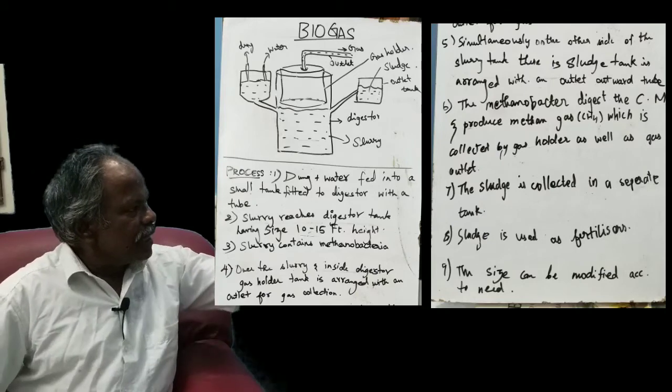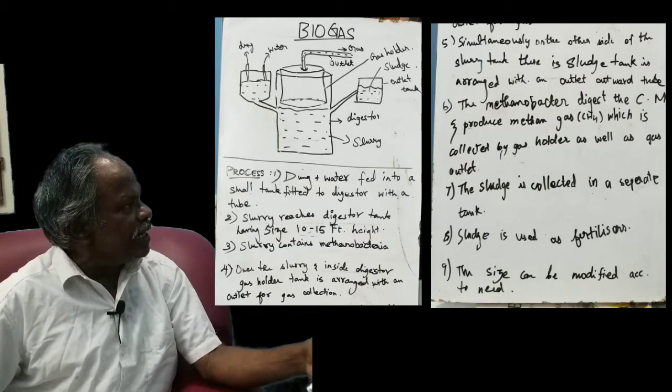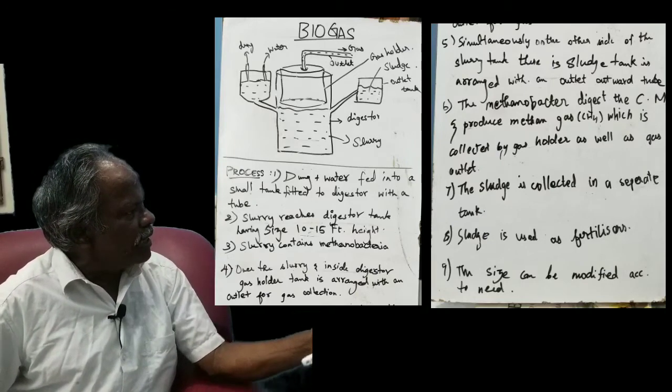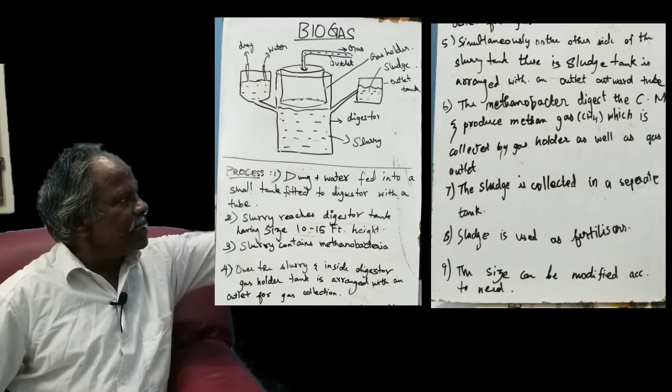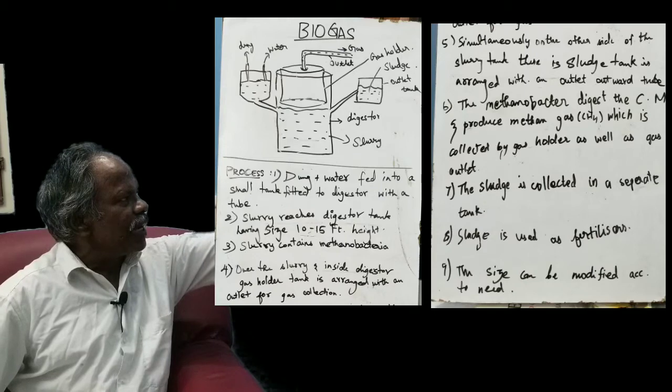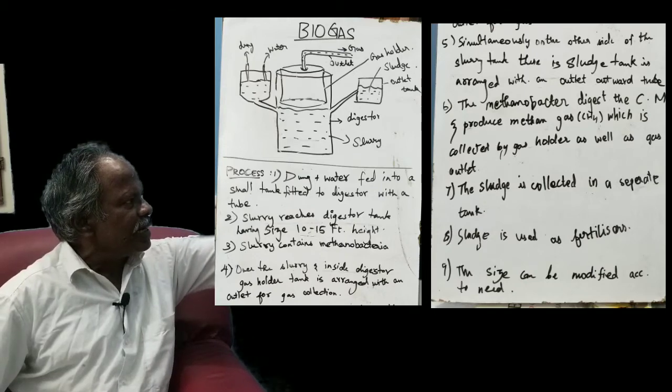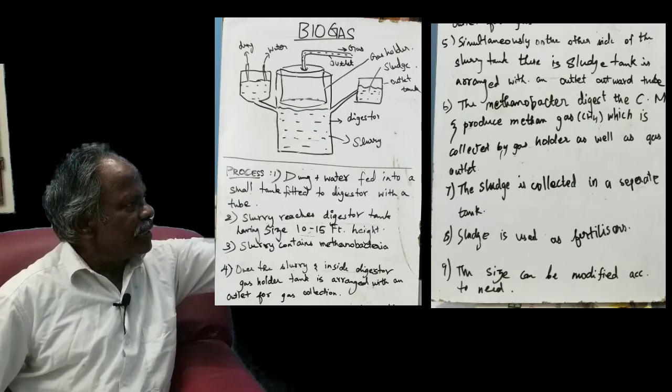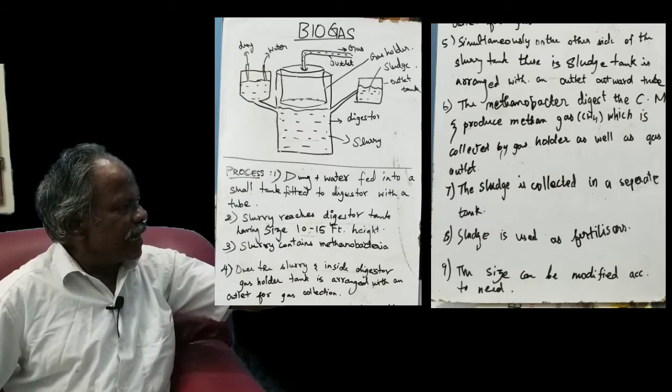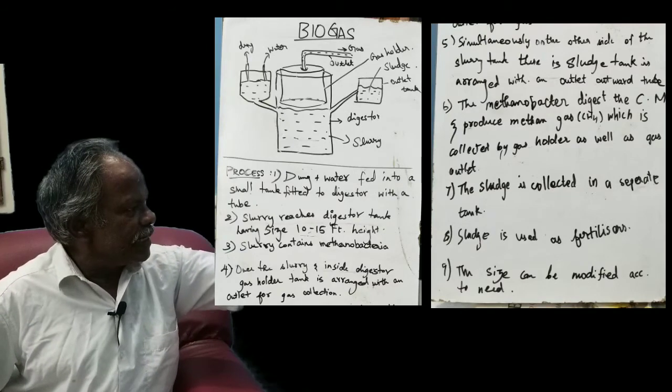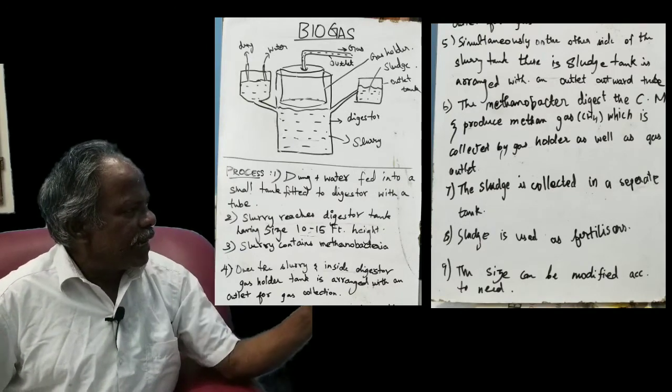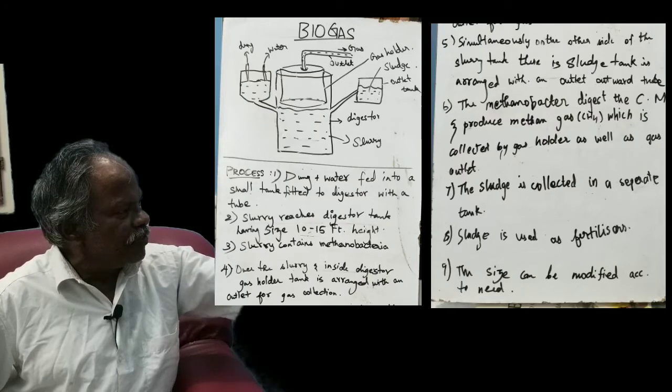Now we will see the process. Dung and water is fed into a small tank fitted to the digester with a tube. The slurry is made and that is fed into the digester tank. The slurry reaches the digester tank having the size of 10 to 15 feet height.